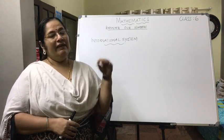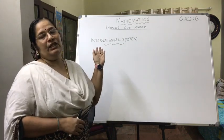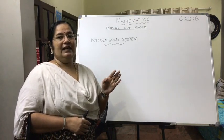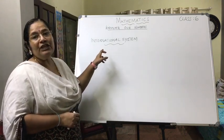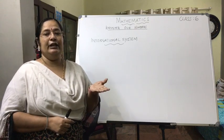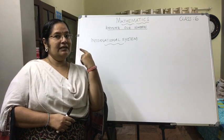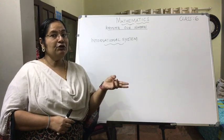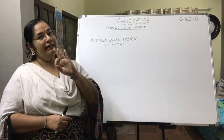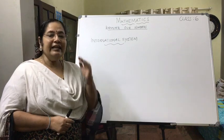The Indian system is used by us, but the international system is used by the whole world when large numbers are given. In the Indian system there are four periods and nine places. Unlike that, the international system of numeration has only three periods, and each of the three periods is divided into three places — all equally divided into three places each.